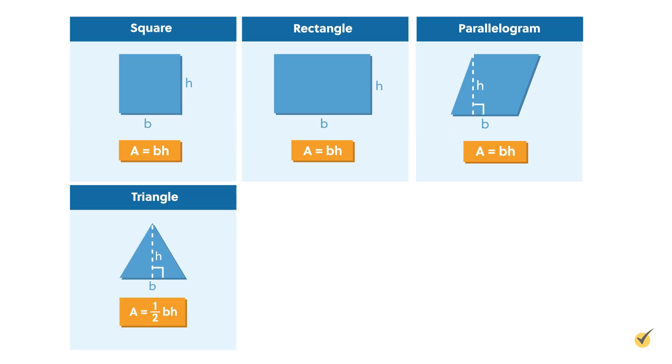The area for a triangle is equal to one-half times the base times the height. The area for a trapezoid is equal to one-half times base 1 plus base 2 times the height.